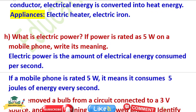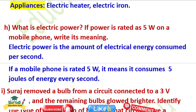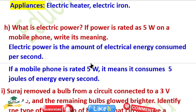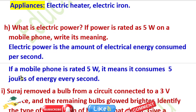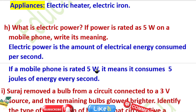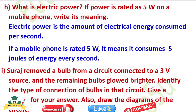Question H: What is electric power? If power is rated as 5 watt on a mobile phone, write its meaning. Electric power is the amount of electrical energy consumed per second. If a mobile phone is rated 5 watt, it means it consumes 5 joules of energy per second.